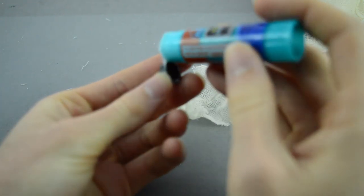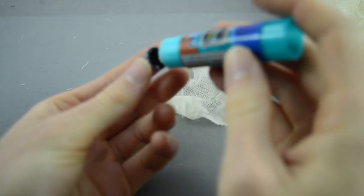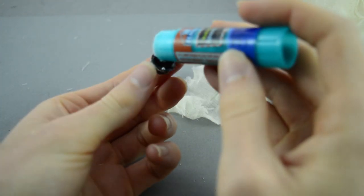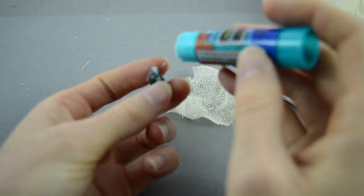Then also put some on the underside as well, the underside of the rim. Don't put any inside the actual helmet, only on the underside of the rim.